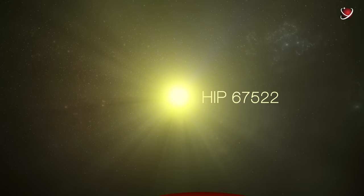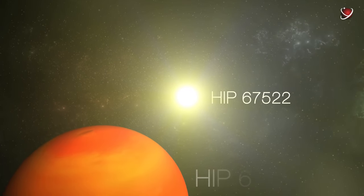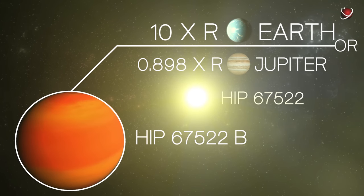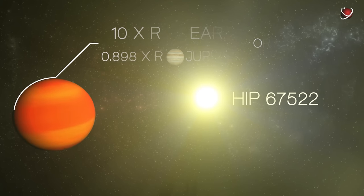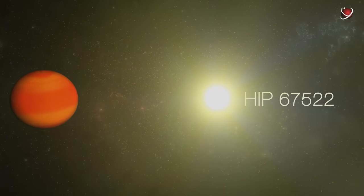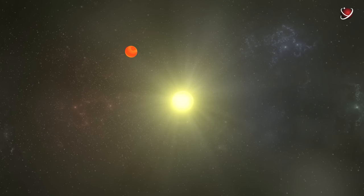It turned out that a planet called HIP 67522 b rotates around this star. It has a radius of about 10 Earth, or 0.898 radius of our Jupiter. With such statistics, the planet automatically fell into the category of typical hot Jupiters. At the time of detection, it was the youngest known hot Jupiter.